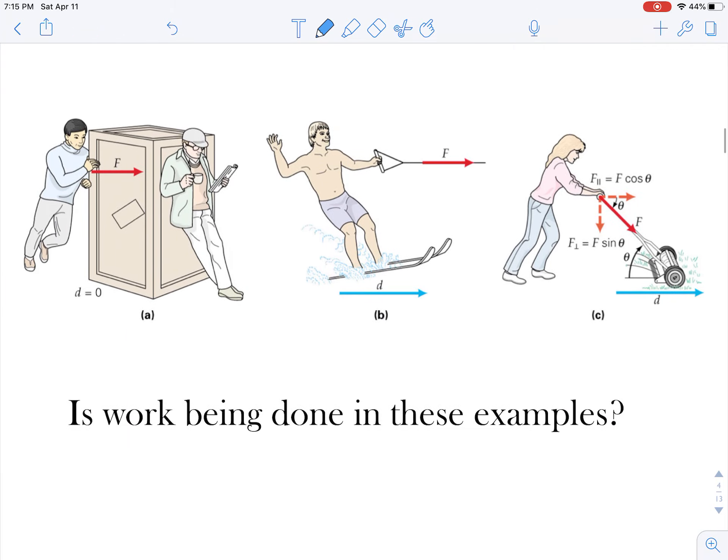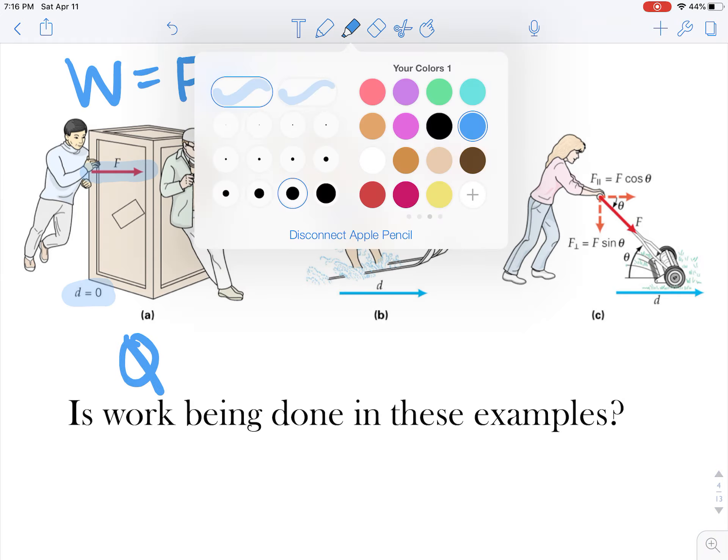So let's look at some examples because this is kind of tricky. In this first example we have a person applying a force on an object but this object is remaining still, it's not moving, it's not experiencing a change. Since there's no change, no work is being done. And if you need more concrete information there's the equation. If my distance is zero my work will end up being zero.